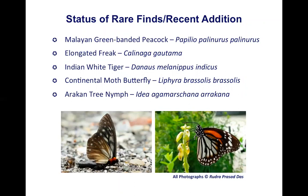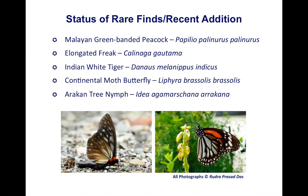Another species is Idea agamarschana, the Arakan Tree Nymph. There have been no recent sightings from Indian Sundarbans, but a few sightings are from the Bangladesh Sundarbans. One more species that was missed is the Yellow Spangle, Papilio elephenor, which was recorded only once from northern Bengal, likely from Buxa Tiger Reserve itself. Throughout India it is very rare, with only two or three sightings altogether.